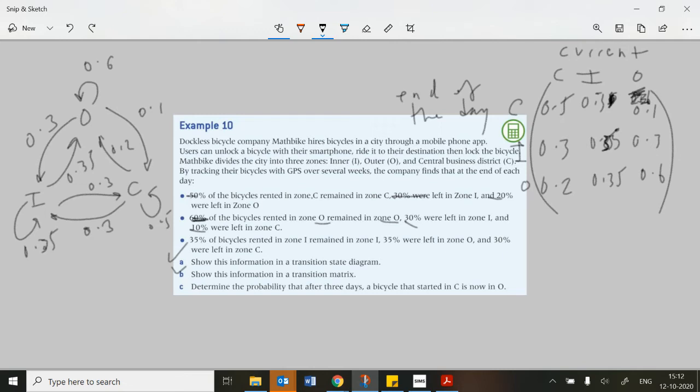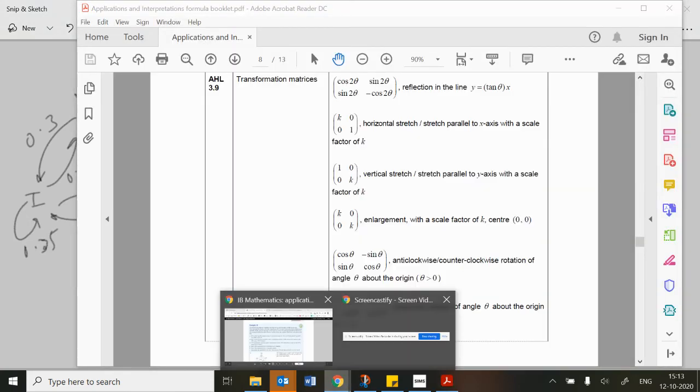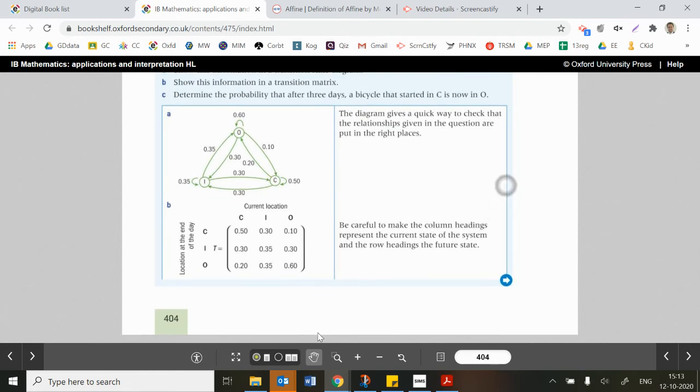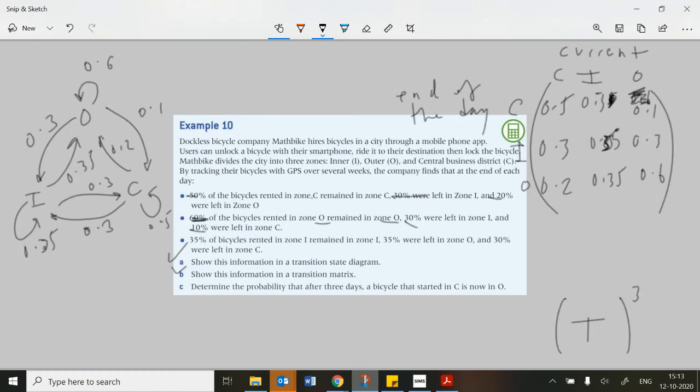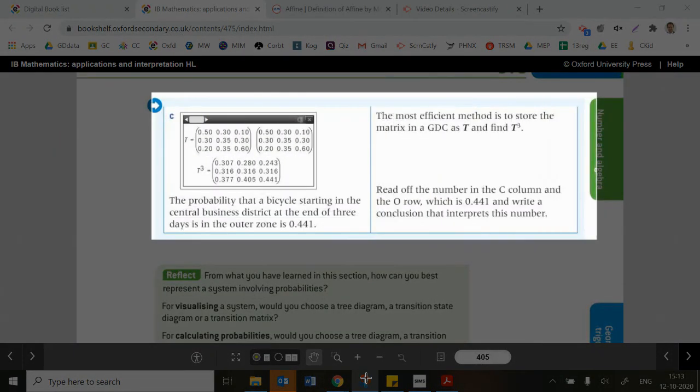And then following this, it says determine the probability that after three days, the bicycle that started in C now is in O. So we need to do this three times over. This transition matrix after three days, so it's in the evening of the third day, so it's going to go through three transformations here. But it's the same matrix every single time, so we need this transition matrix, if you like, done three times over. Let's take the answer for that one just to speed things up a bit. So again, there was our answers. There were our answers. And here we go. Let's go to this one. So they've done this as well. They've done it using a calculator.